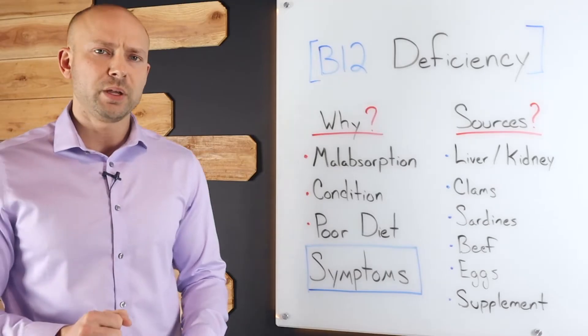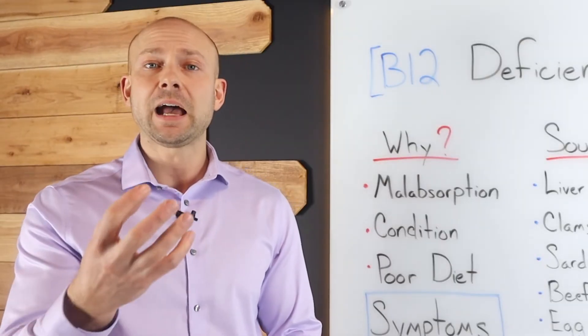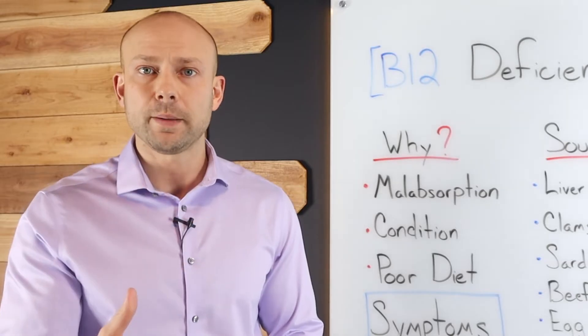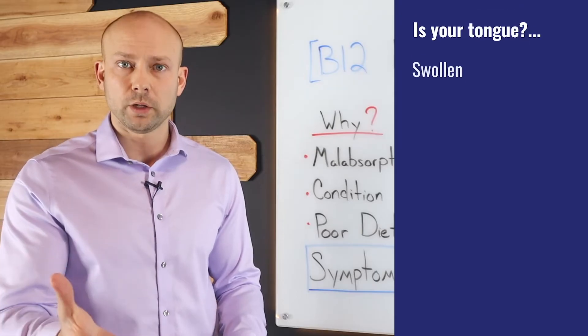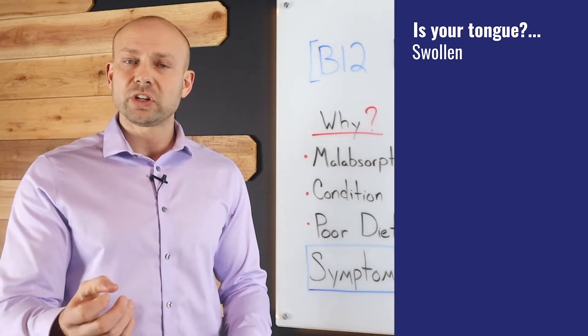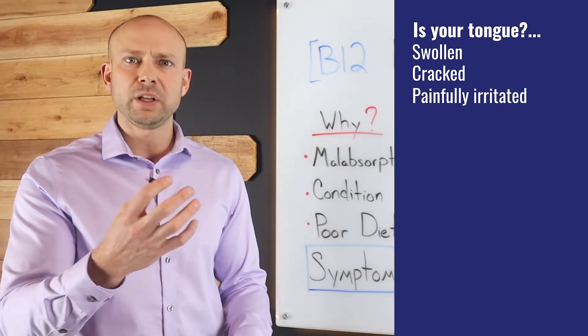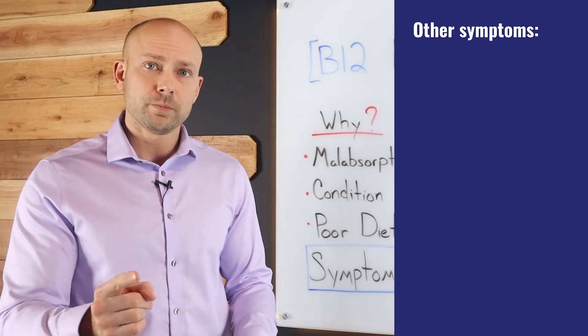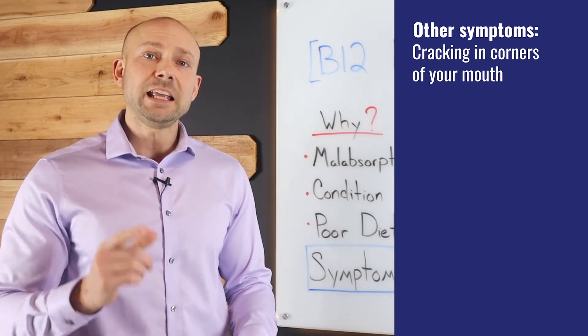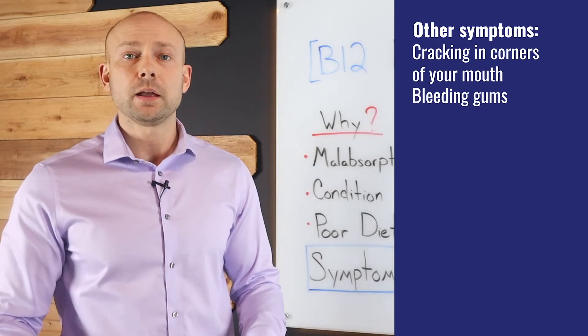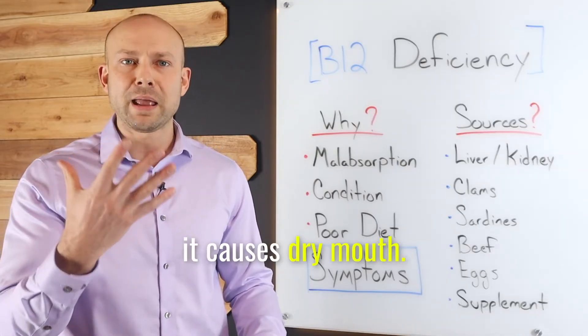Here's something really interesting about B12. When you start to get a deficiency, it impacts your oral health in a big way. First of all, your tongue will be swollen. The next thing is you'll start to get cracks in your tongue. You can even get a lot of painful irritation in your tongue as well. From there, you can get cracking in the corners of your mouth and even bleeding gums. So it affects your oral health in a big way.